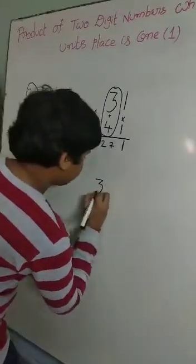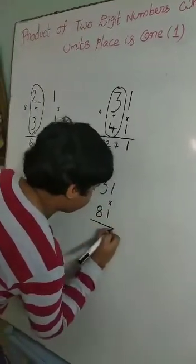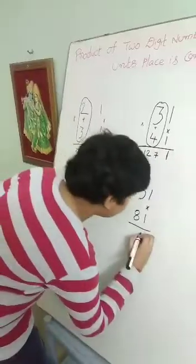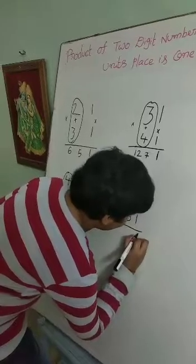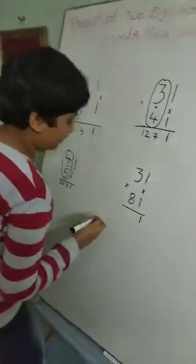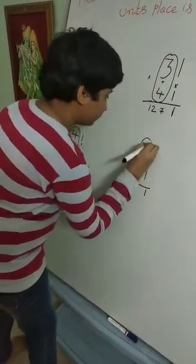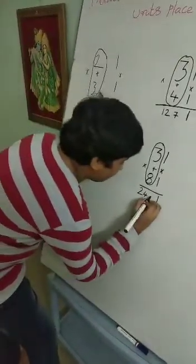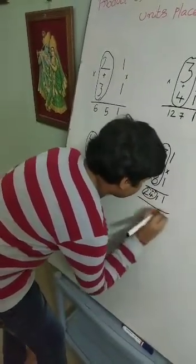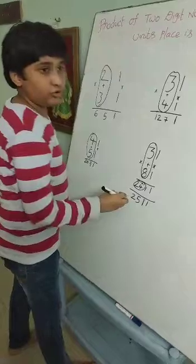Let us have one more example: 31 into 81. In the unit place there is 1, and in the 10s place there is 3 and 8. When we multiply the unit place, 1 into 1 is 1. Now we multiply the 10s place: 3 into 8 is equal to 24. Then 3 plus 8 is equal to 11. We write 1 here and carry 1 to 24, making it 25. The answer of 31 into 81 is equal to 2511.